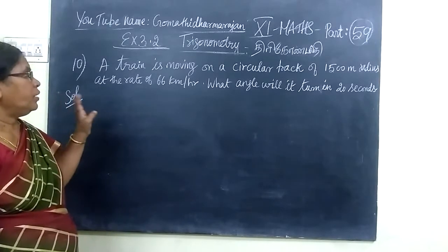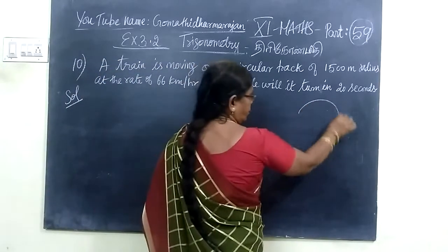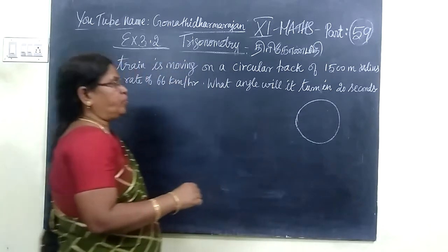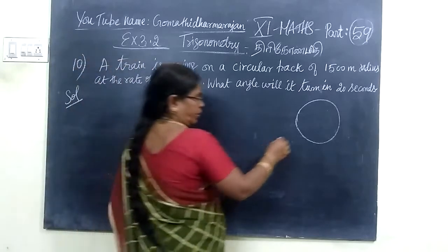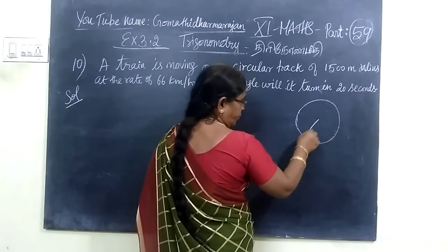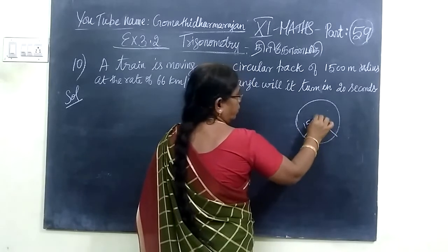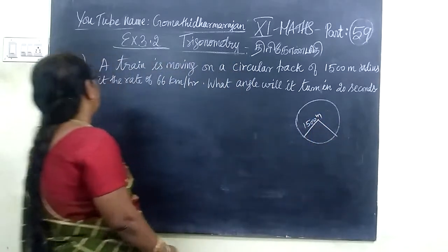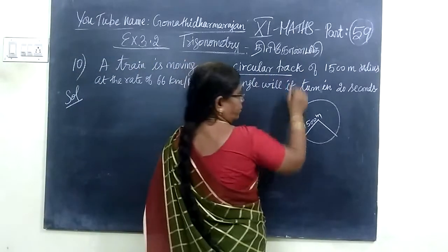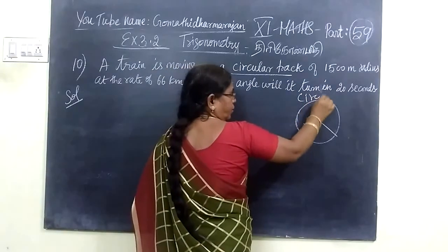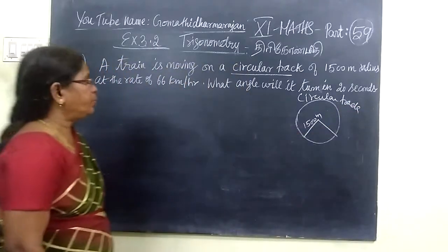We are given here the train is moving on a circular track. We are given a circular track. The train is moving with a radius of 1500 meters. The radius is given as 1500 meters.